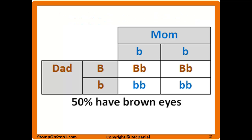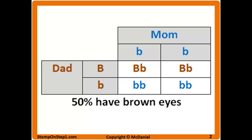When covering dominant versus recessive alleles it is often shown in a Punnett square, with the dominant allele given a capital letter and the recessive allele given a lower case letter. Therefore a heterozygous carrier for the recessive gene would be represented with a capital and a lower case letter. The classic example here is brown eyes versus blue eyes — brown eyes is dominant and blue eyes is recessive, so capital B is for brown eyes and lower case b is for blue eyes.